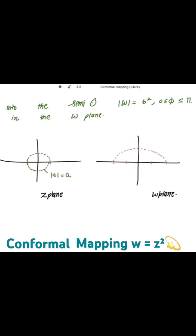The circle mod z equal to a maps to the semicircle mod w equal to a squared. For mod z equal to b, this is mod z equal to a in the first quadrant, and this is mod w equal to a squared, which is the transformed image in the w plane.